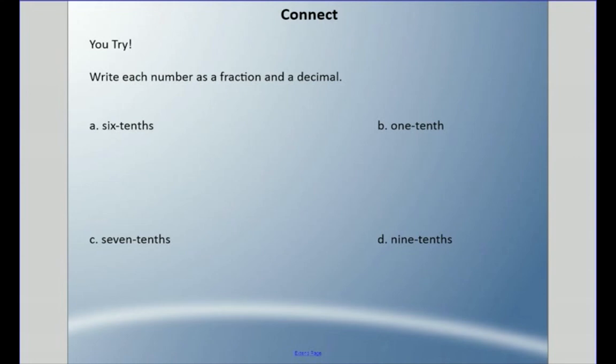I want you to try another one here. I've written it out in words, but I'd like you to write each as a fraction and as a decimal. Pause it and come back when you're ready. The first one is six-tenths: 6/10, or 0.6. B is one-tenth: 1/10 and 0.1. Seven-tenths: 7/10 and 0.7. And nine-tenths: 9/10, and that is our decimal, 0.9.